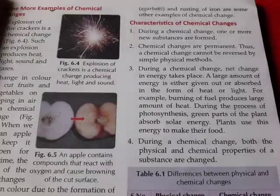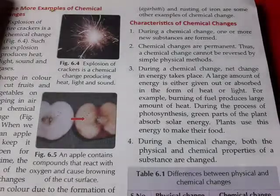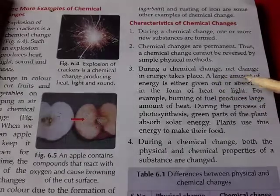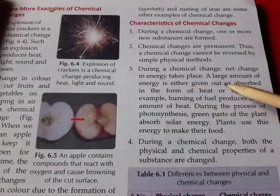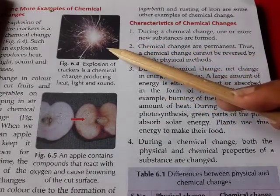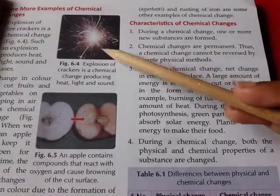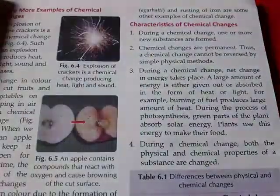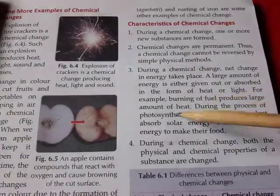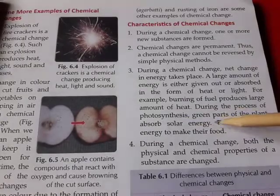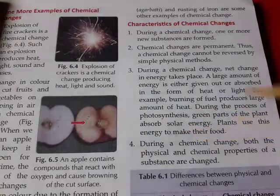When there are chemical changes, there is a net change in energy. Because the internal property of a substance changes, there is energy consumption or release. There may be a large amount of energy given to drive the reaction, or energy gained from it. For example, burning of crackers releases heat, light, and sound energy. In photosynthesis, green plants absorb solar energy to drive chemical processes. Both physical and chemical properties of the substance change during a chemical change.